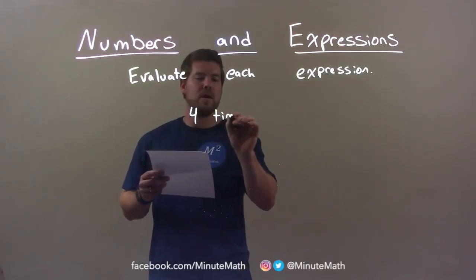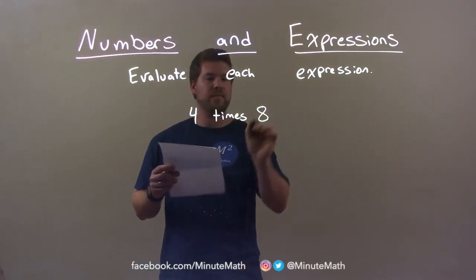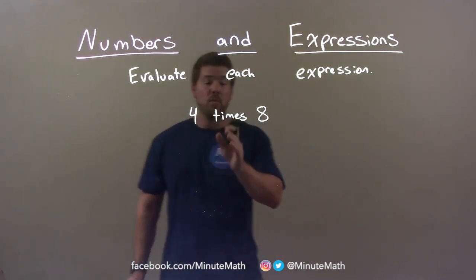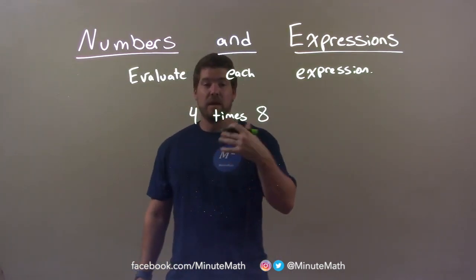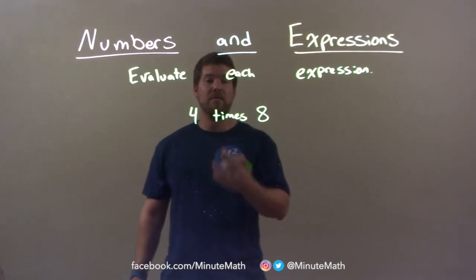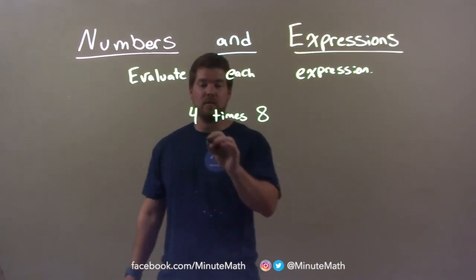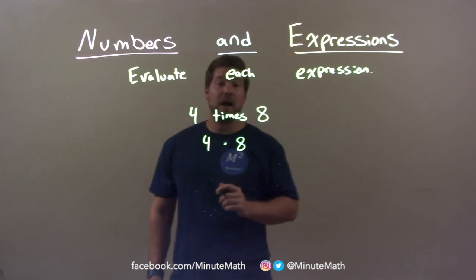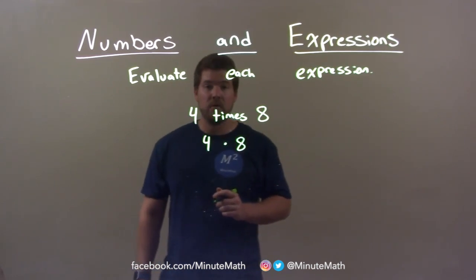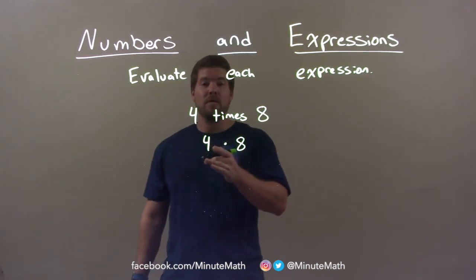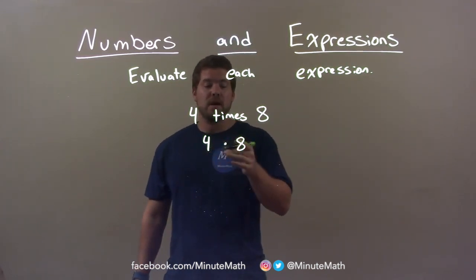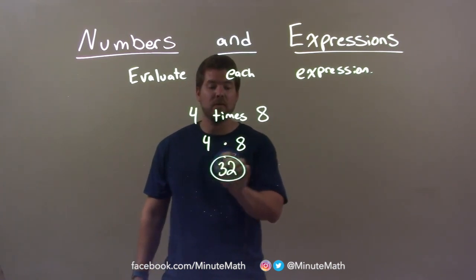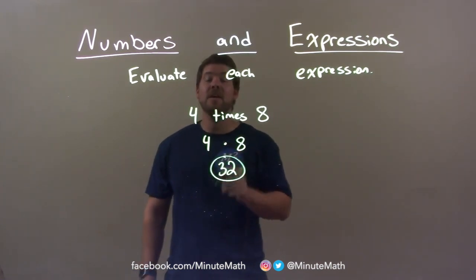4 times 8. So we have 4 times 8. Multiplication here is the same thing as 'times' — just multiply. So we have 4 multiplied by 8. Now we have our algebraic expression. Then we simplify: 4 times 8 is just 32. Our final answer here is just 32.